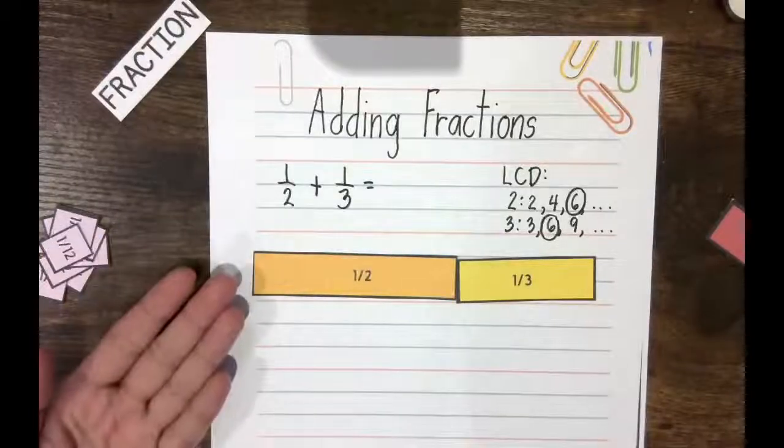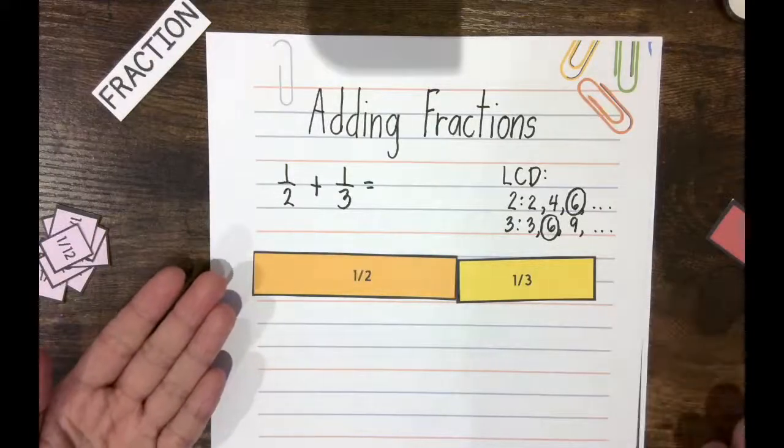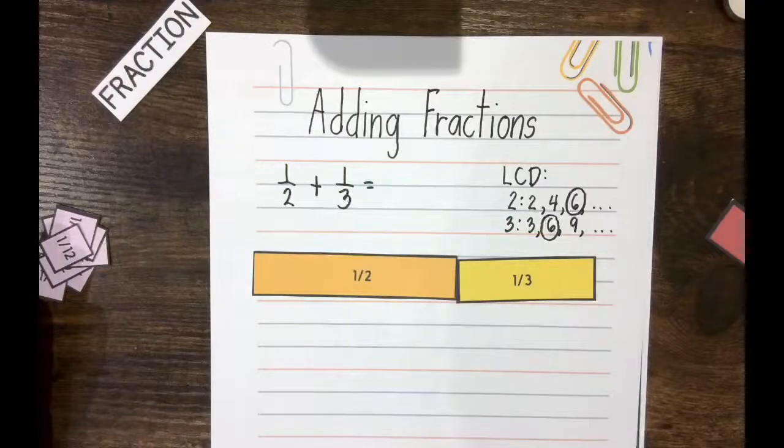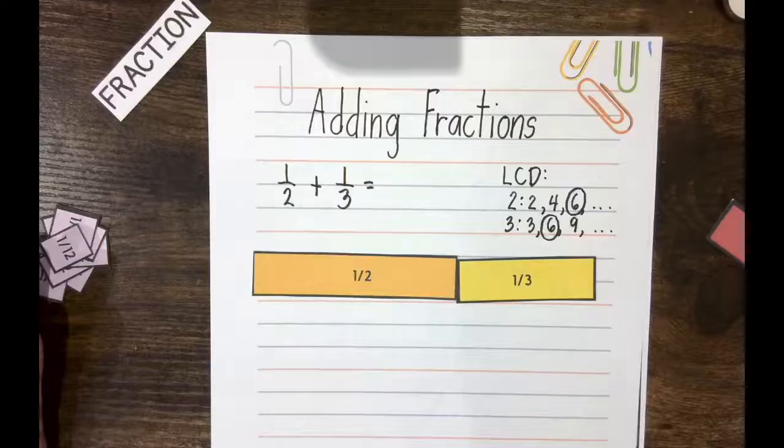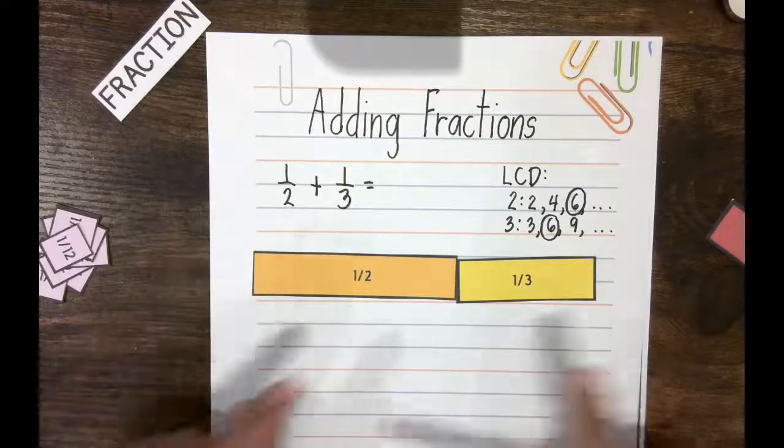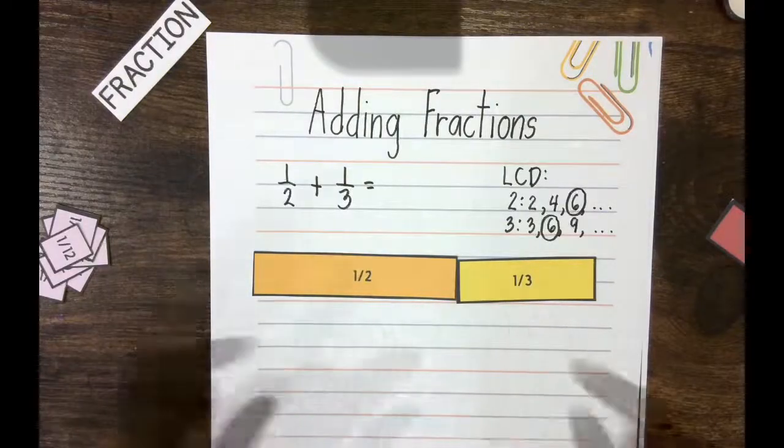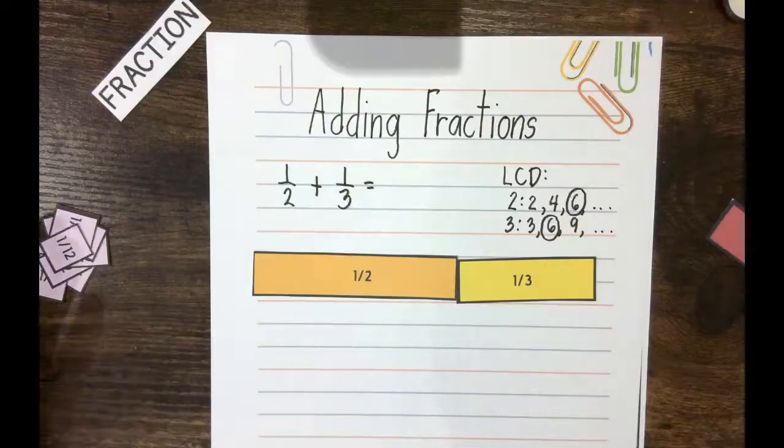So what that means is it's easier to add fractions when they're made out of unit fractions of the same size. Like 1/2 is a unit fraction, 1/3 is a unit fraction, but they're unit fractions of different sizes. I want to use fractions with unit fractions of the same size. Now I can do that by expressing these two fractions into fractions with the same denominator.